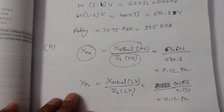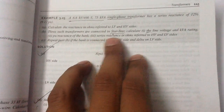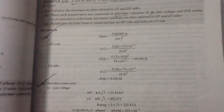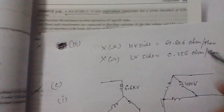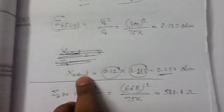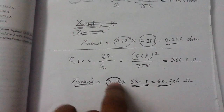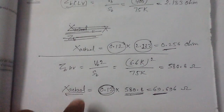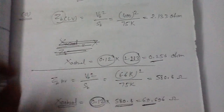In the third part of Part B, we are asked to find the series reactance in ohms referred to HV and LV side. The reactance values remain the same as calculated in Part A: X_actual referred to LV side is 0.256 ohm and X_actual referred to HV side is 69.696 ohm, regardless of whether the transformer is connected star-star, star-delta, or delta-delta.